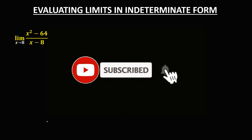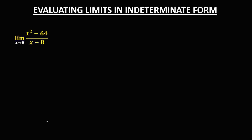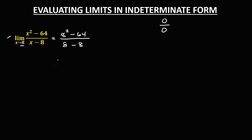Welcome to Mathstoria. Today's topic is evaluating limits in indeterminate form. A limit is in indeterminate form if it gives 0 over 0. For this given problem, if we use direct substitution as x approaches 8, we get 8 squared minus 64 over 8 minus 8, which simplifies to 0 over 0. So this limit is indeterminate form when using direct substitution.